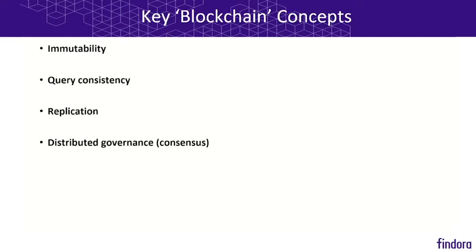Given those problems with centrally managed databases, we come to the following four key blockchain concepts: immutability, query consistency, replication, and distributed governance, or consensus. Let's visit these each individually.